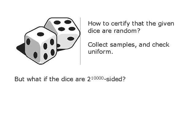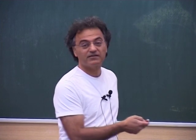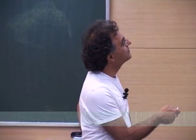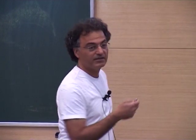By 'truly random' I mean independent and identically distributed. If these are physical dice, it's clear what you do: you collect samples and check that they are uniform. But the problem I really want to talk about is where these dice are figurative — some sort of physical random number generator out of which you want to generate, say, 10,000 random bits.